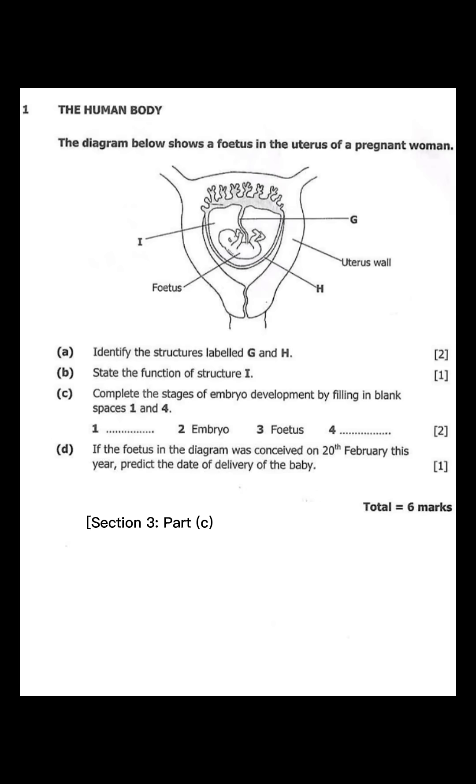Section 3, Part C. Complete the stages of embryo development by filling in blanks 1 and 4. Here's how you approach this. The stages of human development are 1. Zygote. 2. Embryo. 3. Fetus. 4. Baby. The first stage is the zygote, which forms right after fertilization.